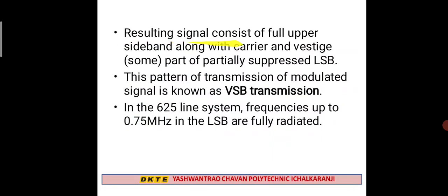The resulting signal consists of the full upper sideband along with the carrier, and a vestige — meaning some part — of the partially suppressed lower sideband (LSB). This pattern of transmitting the modulated signal is known as vestigial sideband (VSB) transmission: upper sideband along with the carrier and some part of the lower sideband.